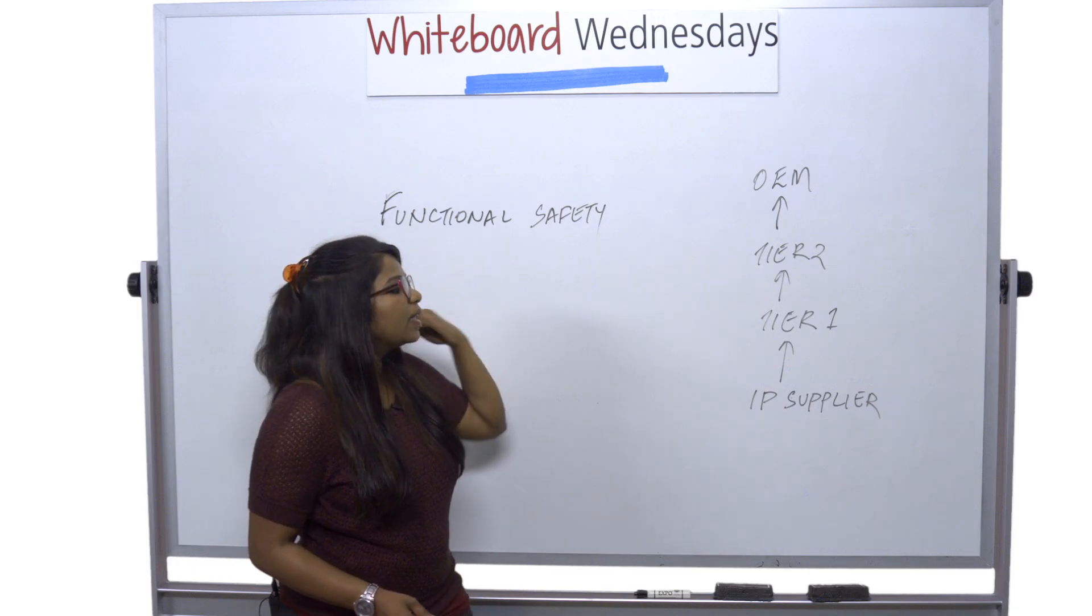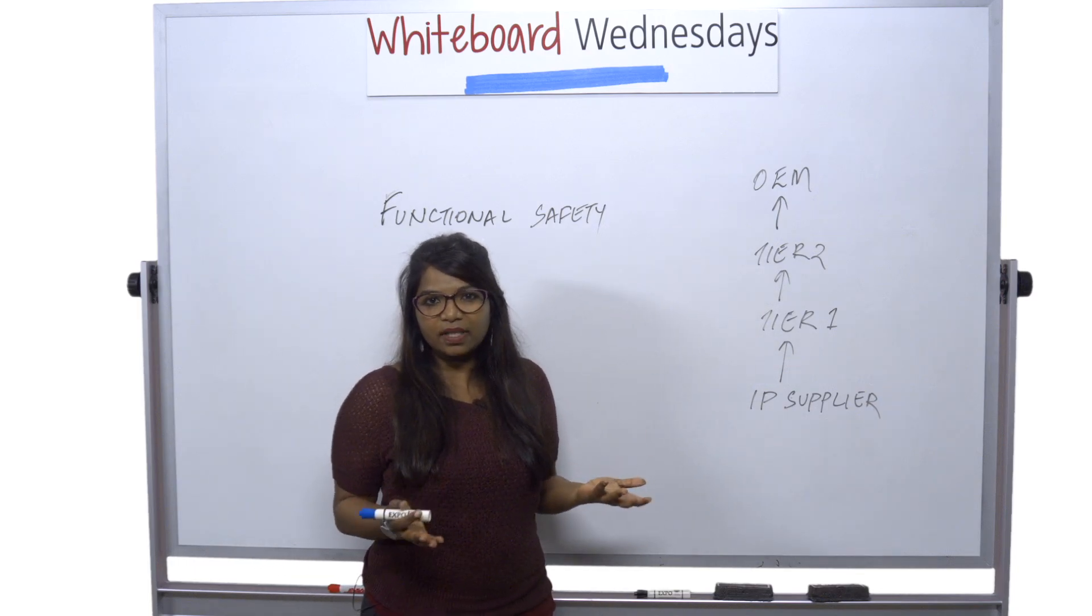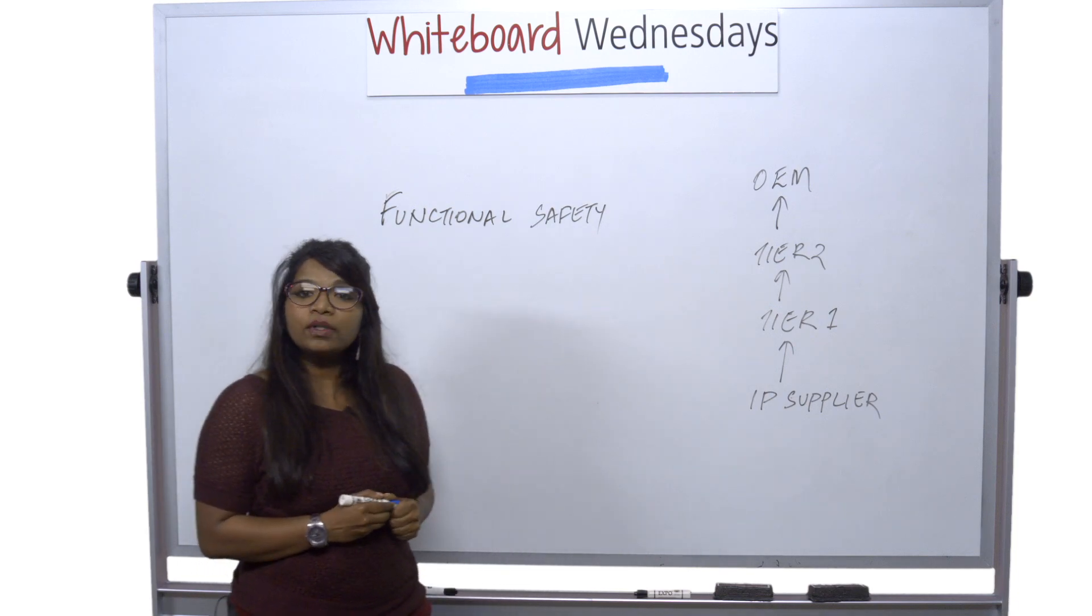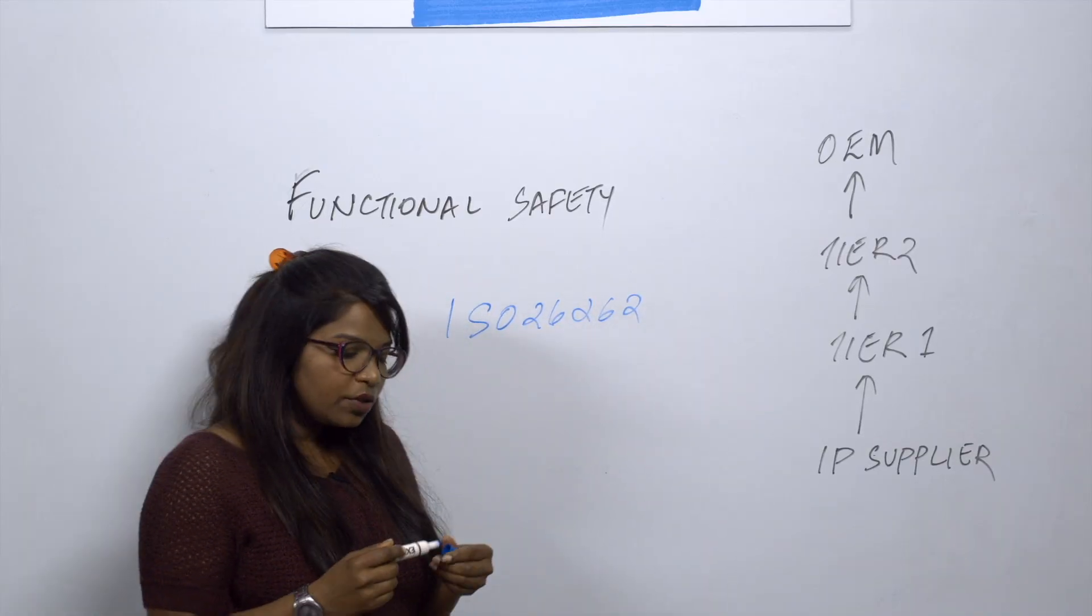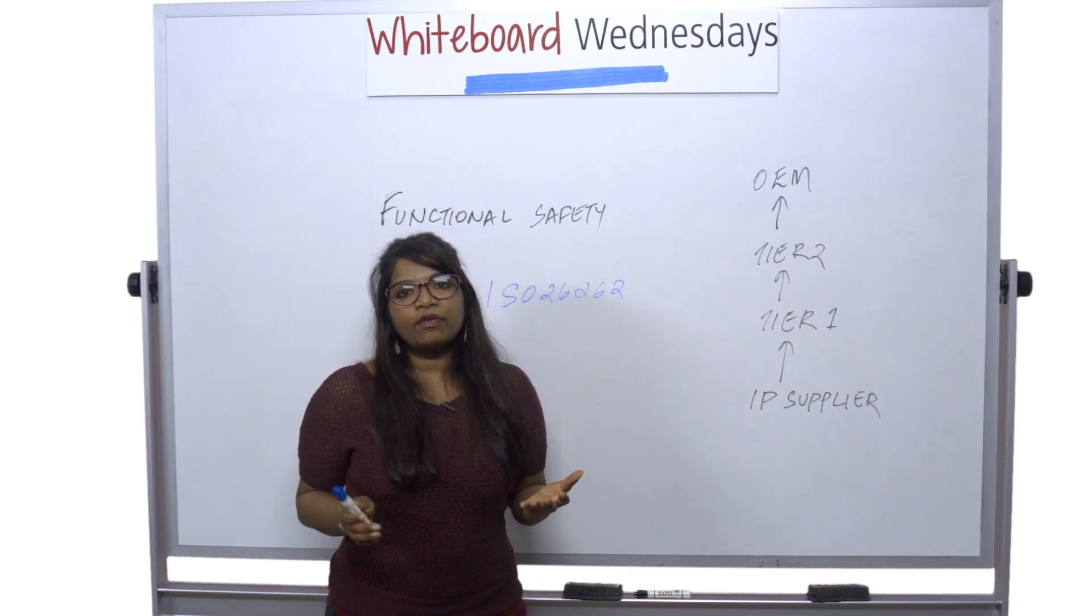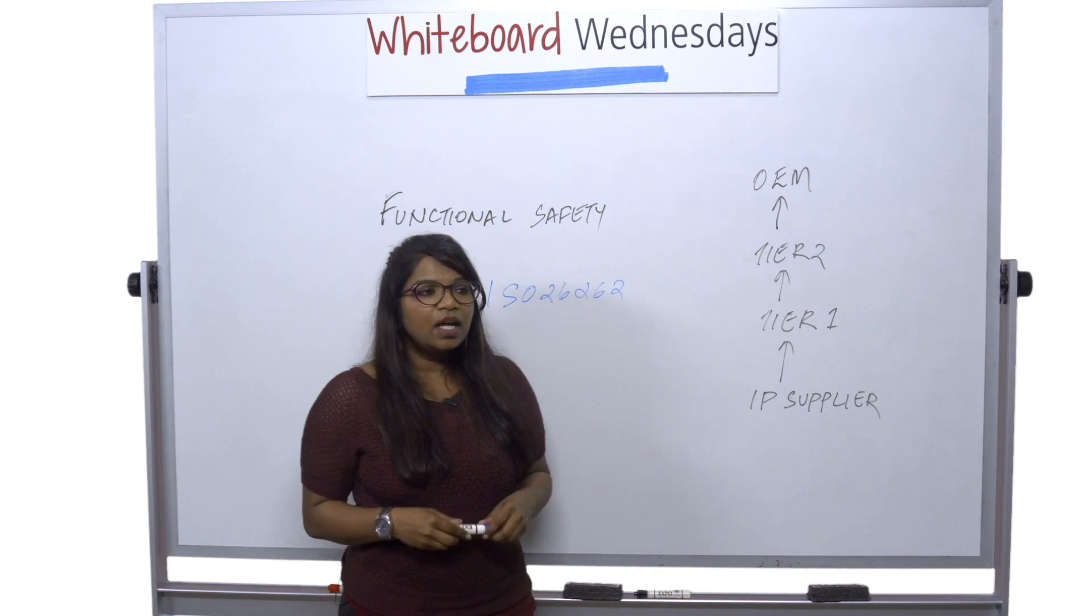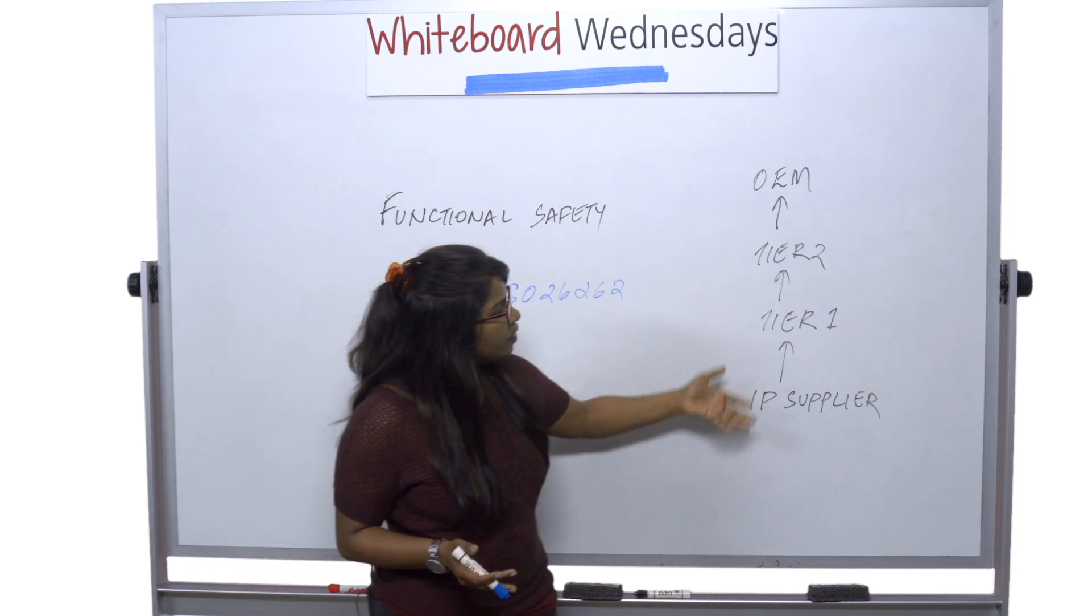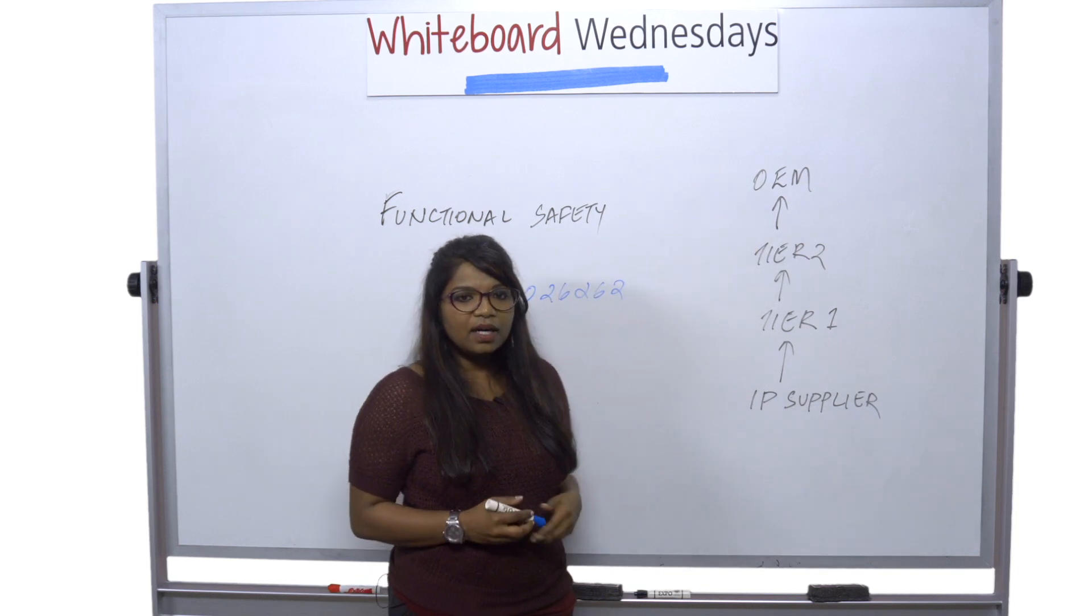So you need to ensure that each of these are actually satisfying the functional safety protocol. So in order to do that we have what we call the ISO 26262. So ISO 26262 is an automotive standard that is targeted for electronics that go into a safety application into a vehicle. So the standard actually provides guidelines to all of these different tiers that are involved in actually making the electronics that go into the car.